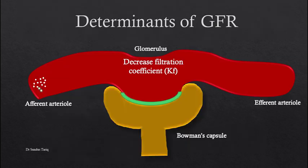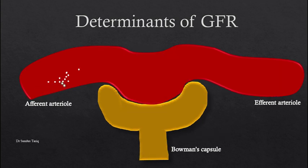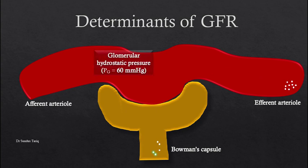The first important determinant is the filtration coefficient. A decrease in the filtration coefficient can occur whenever there is a decrease in surface area or decrease in permeability of the filtration barrier. This can occur in chronic diseases like diabetes mellitus and hypertension, in which fibrosis and thickening of the basement membrane leads to decrease in surface area. Whenever there is a decrease in surface area or decrease in permeability, this decreases the filtration coefficient and ultimately decreases filtration across the barrier, decreasing the GFR.